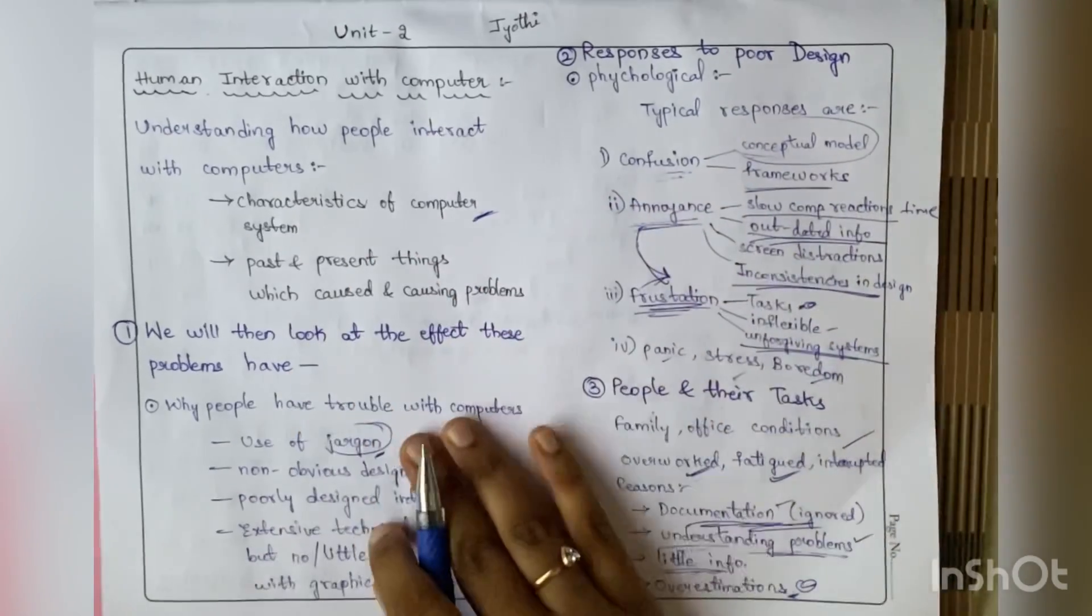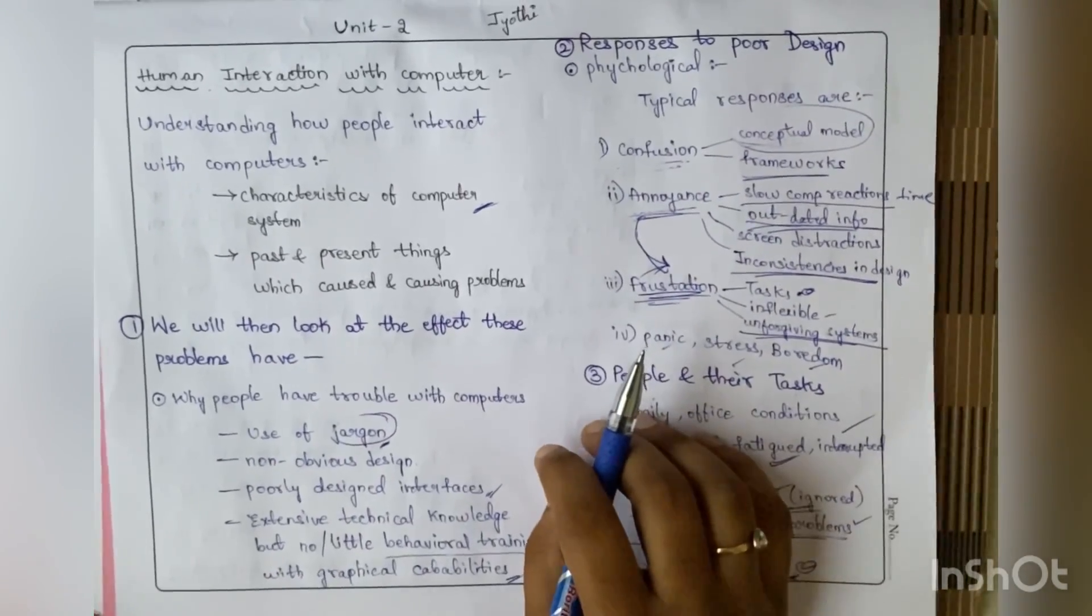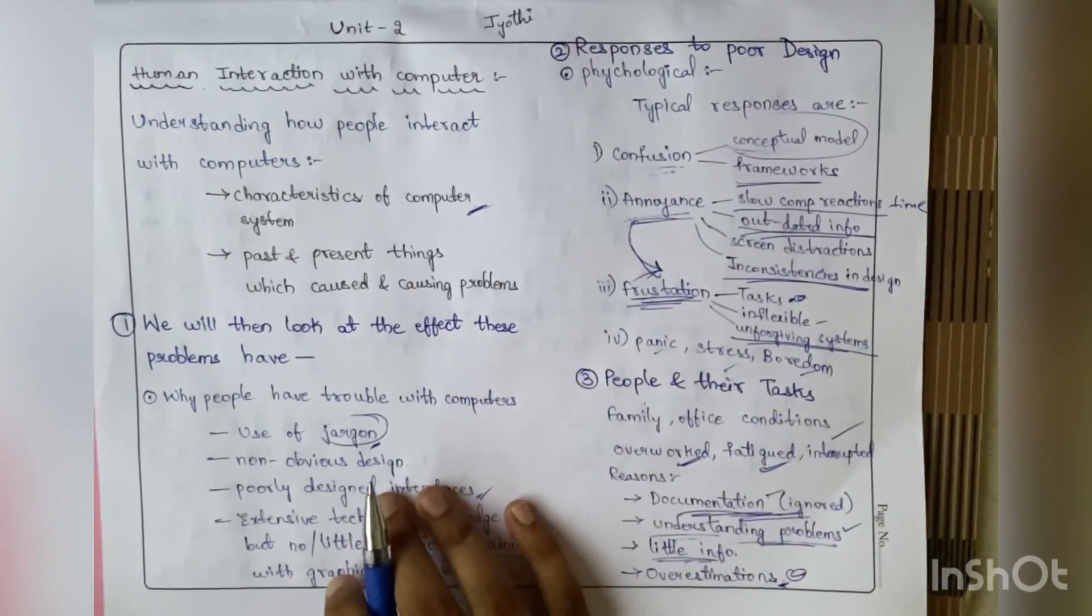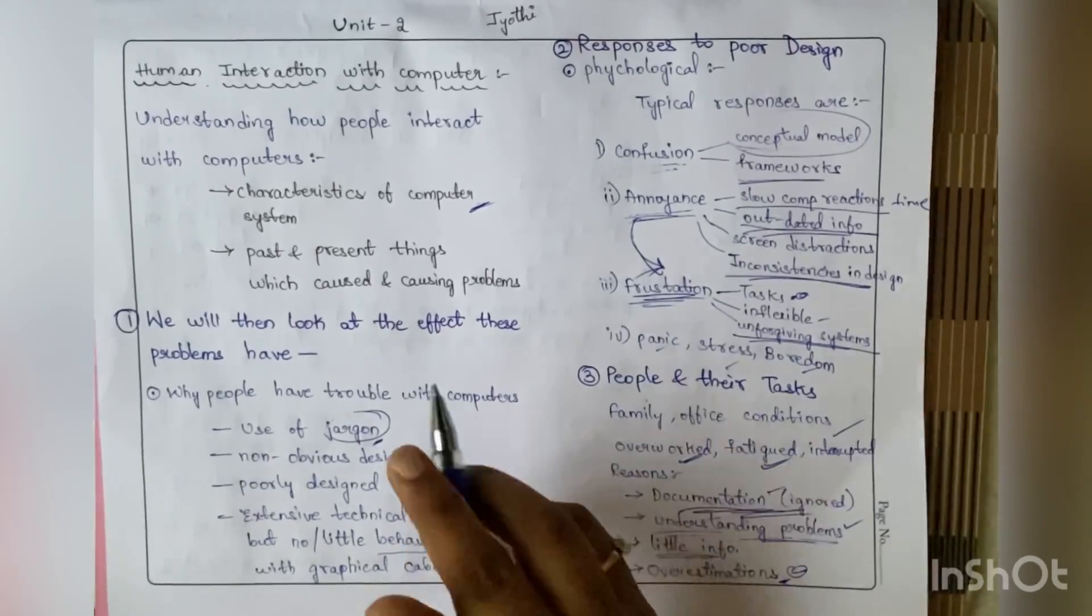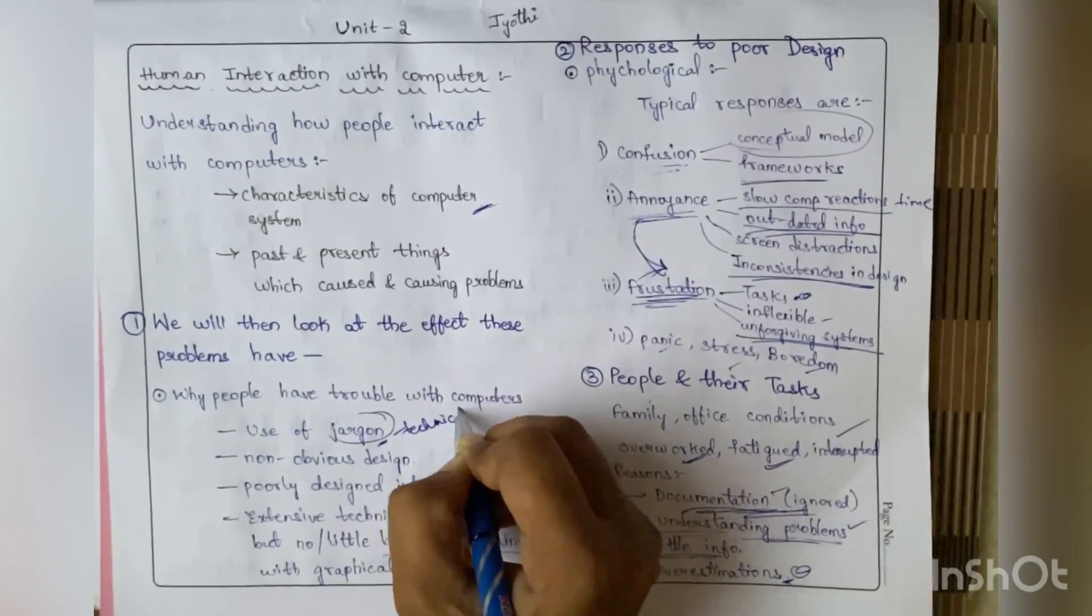The first subtopic is why people are having trouble with computers - why they are facing trouble in the interaction process. The first reason may be use of jargon. Jargon is like technical words - when we use more technical terms, people may not understand them.